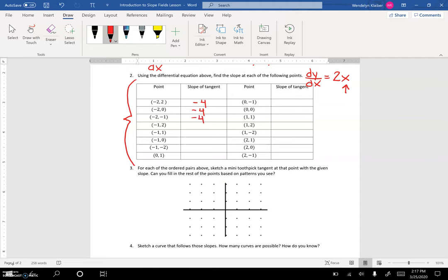Now we have a new x value, -1. So 2 times -1 is -2. Anytime the input is -1, the slope will be -2. What happens if x is 0? Well, 2 times 0 is 0. So anytime I have an ordered pair where x is 0, the slope will be 0. We continue like this and complete the table.